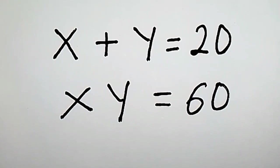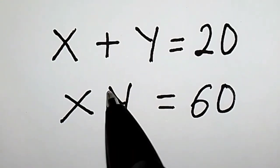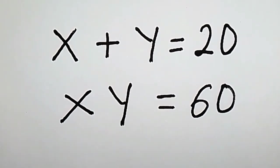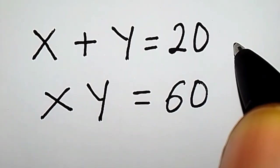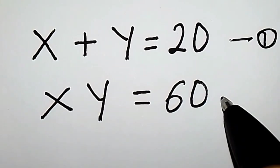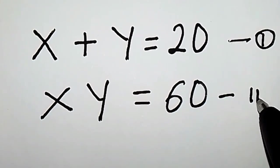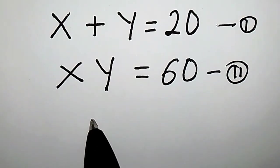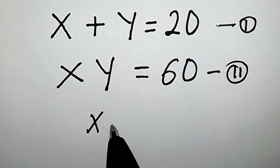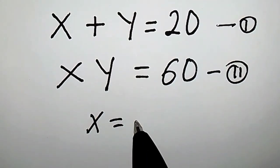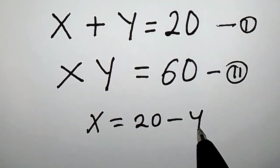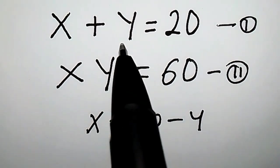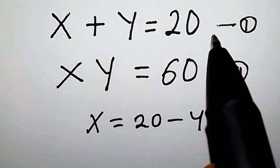Hello. This algebra problem is pretty easy. We have to find x and y. Let us call this equation 1 and this equation 2. The first equation: x is equal to 20 minus y, if we move y to the right-hand side.